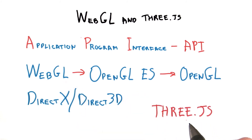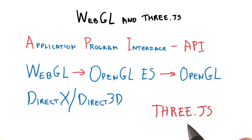This is why we'll be using 3JS, a free development library with many useful features. Just a few lines of code in 3JS can create objects with materials, set up lighting and a camera, and even perform animation.